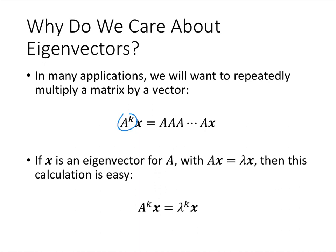Now, if we happen to have an eigenvector when we do that, with A times x equaling lambda x, then that calculation turns out to be pretty easy, because multiplying A by x just gives us lambda times x. And then if we multiply A again — A times lambda x — by our properties of matrix multiplication, that's just the same as lambda times Ax, that's lambda times lambda x, that's lambda squared x. And so if we multiply by A again, we'll get lambda cubed times x, and so on. This gives us a really easy way to compute this repeated matrix multiplication, which otherwise would be very tedious to compute.